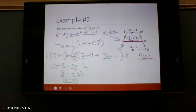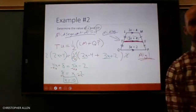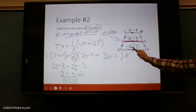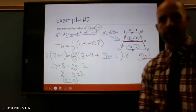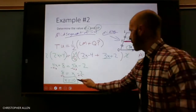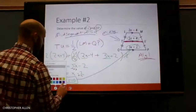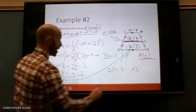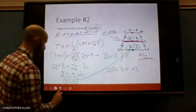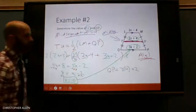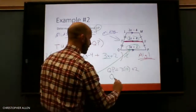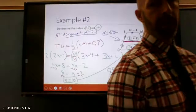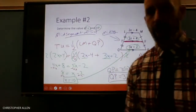We've found x = 10, but the question also asked us to find QP. QP = 3x + 2. Now that we know x = 10, we plug it in: QP = 3(10) + 2 = 30 + 2 = 32. So QP equals 32. That example involved the mid-segment theorem and some algebra. Any questions on that one?